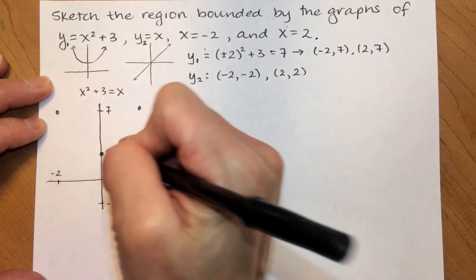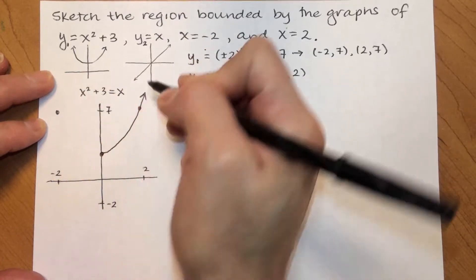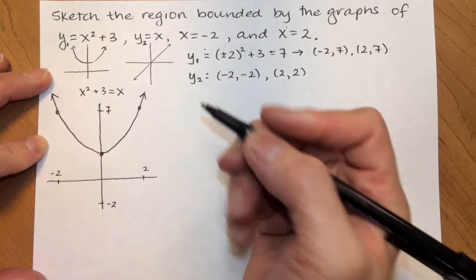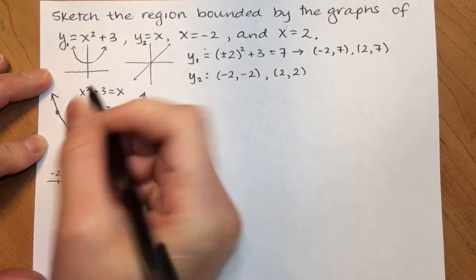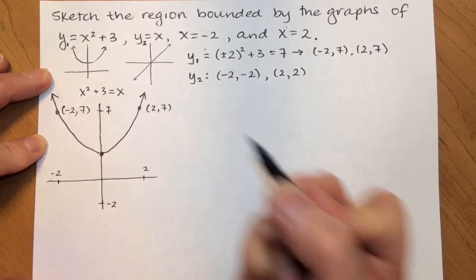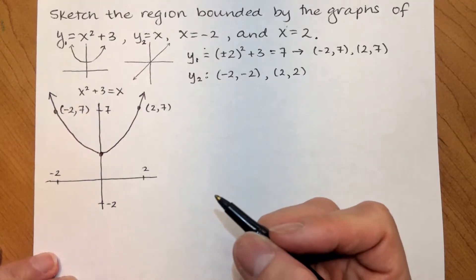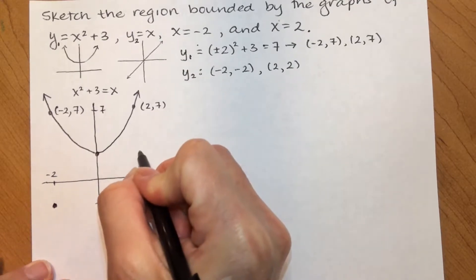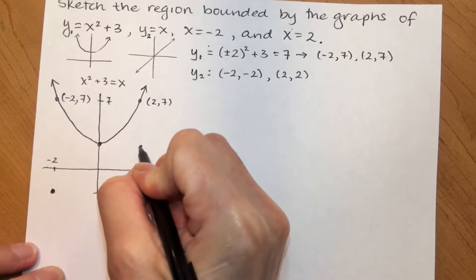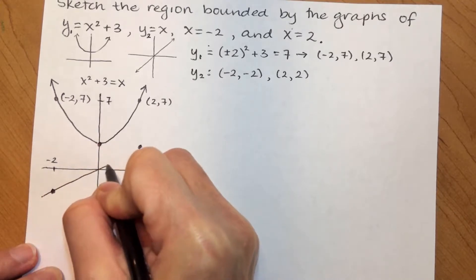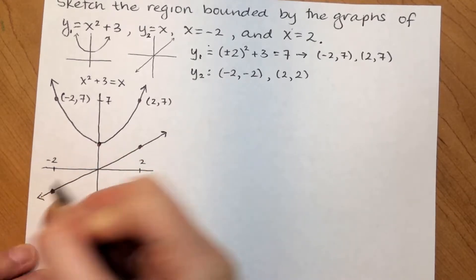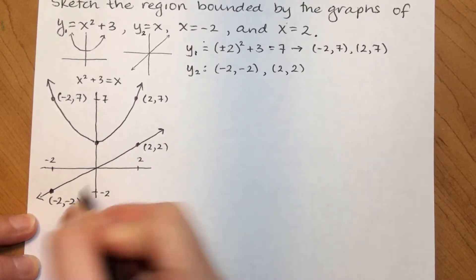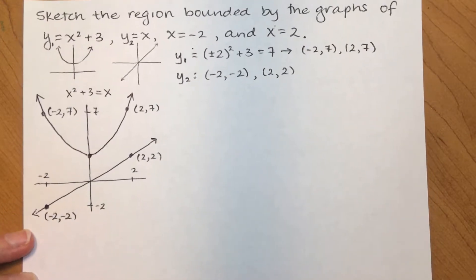The parabola is going to look like this. Okay. That's 2, 7. That's negative 2, 7. The line goes through the points negative 2, negative 2, and 2, 2. And, you can see the line is a line through the origin like that. Having those points made it really quick and easy for me to draw this graph.